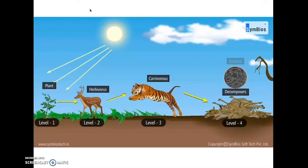And here's an image of an energy diagram. We see the plant as our producer, receiving energy from the sun, giving energy next to the herbivore, which is the deer, who gives energy to the tiger, who is a carnivore and the secondary consumer.